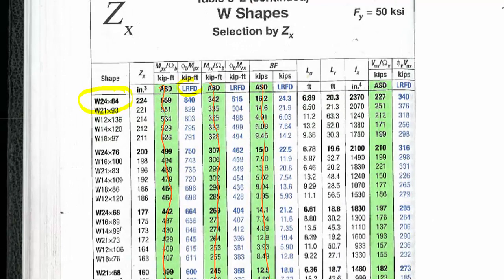What we see is its full moment capacity, phi MP, is equal to 840 kip feet. That is good so long as the brace points for this beam, here's our LP, are closer together than 6.89 feet. So that's the first case. If this beam is braced closer together than 6.89 feet, it's going to function as a fully braced member.